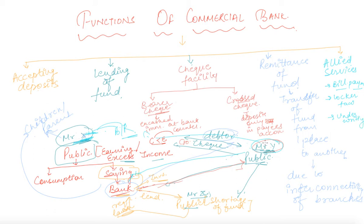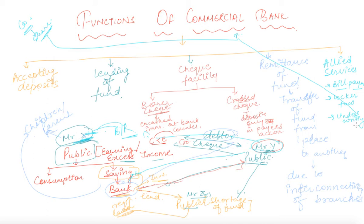Other allied services include underwriting facilities. If a company requires funds, it issues shares. If the public is not interested in purchasing the shares, the commercial bank purchases those shares as an underwriter and pays for them, and afterwards can sell the shares to the public. So another service the bank performs is the buying and selling of shares. There are many such allied services that commercial banks provide to their customers.